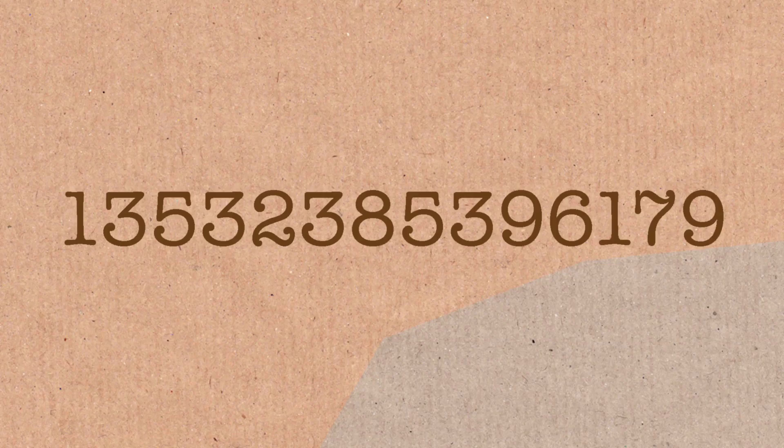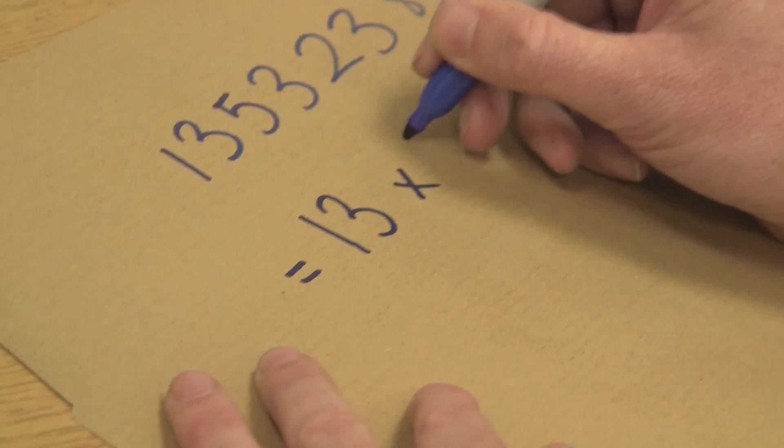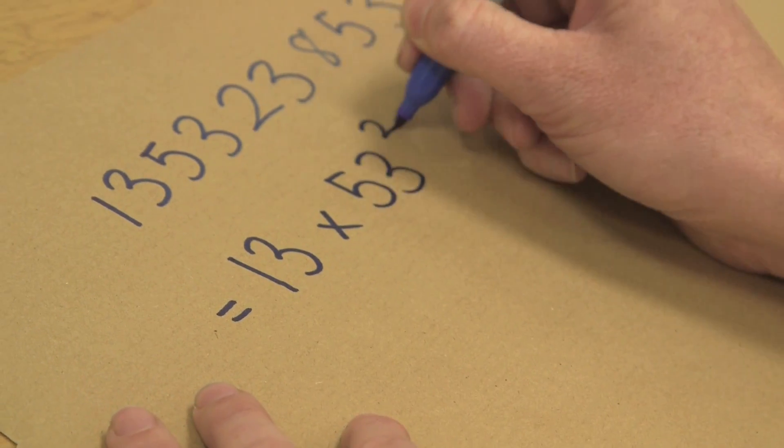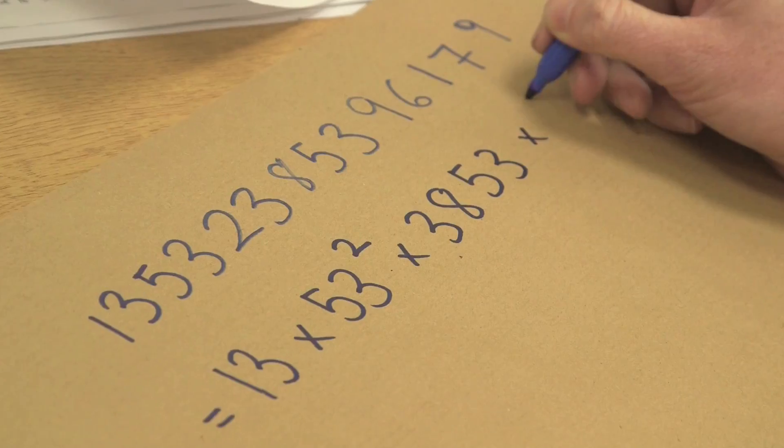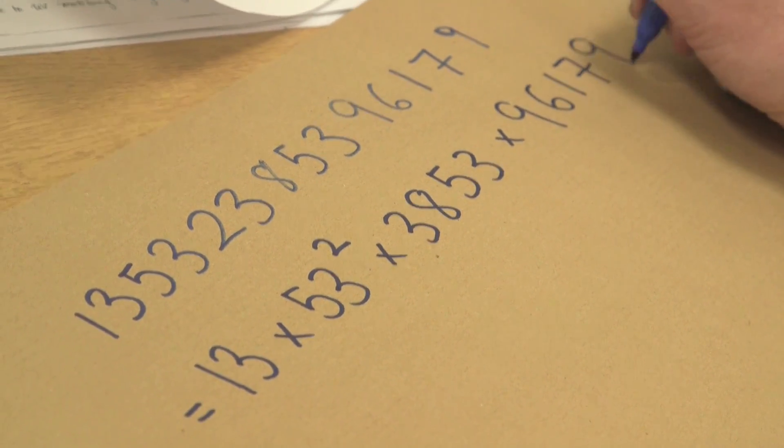So I'll tell you something funny about this number and then we'll say why this is interesting. This number happens to be 13 times 53 squared times 3853 times 96179.